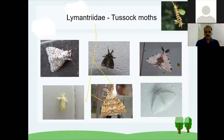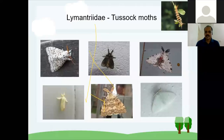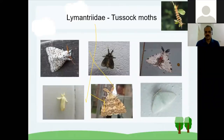Next are tussock moths or tufted moths from the Lymantriidae family — this is probably the first image of a caterpillar that comes to mind when talking about moths. You can see tufts or tussock-like structures on the caterpillar's back, which is why they are called tussock or tufted moths. Their caterpillars are itchy and hairy. You can easily see these caterpillars in the field.